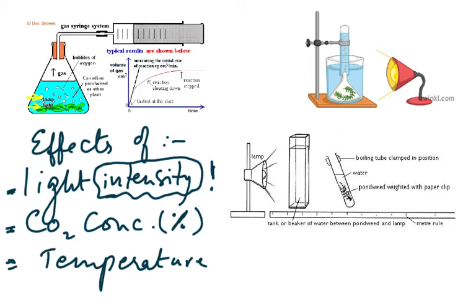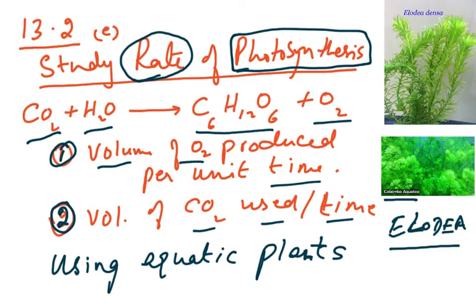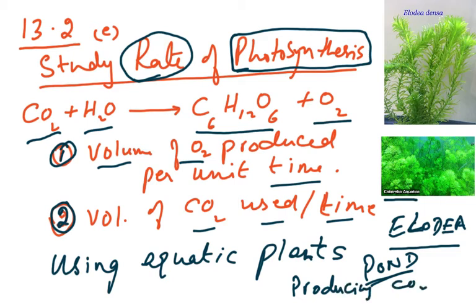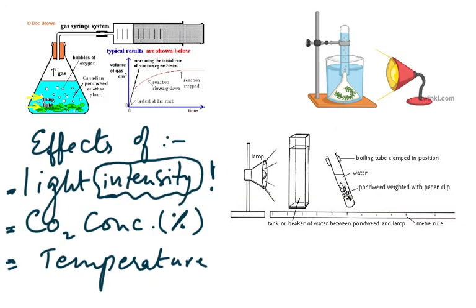Regarding carbon dioxide concentration: the pond weed comes from a pond where microorganisms, fish, tadpoles, or frogs produce carbon dioxide. When you bring it to the lab, you can't use pond water because you won't know the CO₂ concentration, and pond water could be harmful — it may contain microorganisms that cause skin rashes or allergic reactions.